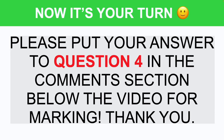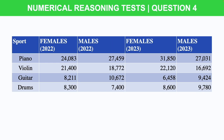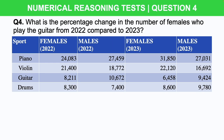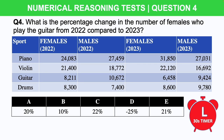Please put your answer to question 4 in the comment section below the video for marking. Question 4: what is the percentage change in the number of females who play the guitar from 2022 compared to 2023? Here is that information in the tables. Remember, just as before, sift out the information you need — most of the data in the table is redundant. Once you have the data, apply a similar percentage calculation from before. I'm going to give you 30 seconds on the timer starting now.